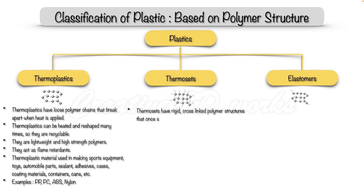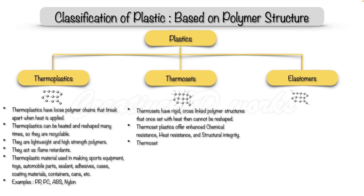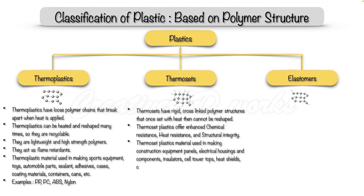Now let's see the thermosets. Thermosets have rigid cross-linked polymer structures that, once set with heat, cannot be reshaped. Thermoset plastics offer enhanced chemical resistance, heat resistance, and structural integrity. Thermoset plastic materials are used in making construction equipment panels, electrical housing and components, insulators, cell tower parts, heat shields, circuit breakers, motor components, disc brake pistons, etc. For example: melamine formaldehyde and epoxy resin.